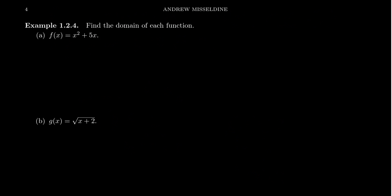Using the domain convention, let's find the domains of some functions. Example A is a polynomial: it has multiplication, exponents, and addition — no square roots, no division. So by default the domain of f is all real numbers, written in interval notation as negative infinity to infinity.